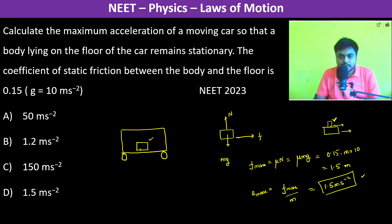So therefore this block can go maximum at the acceleration of 1.5 m per second square. So therefore the car also can go maximum at this acceleration. Otherwise there will be slipping and thus it will not remain stationary.